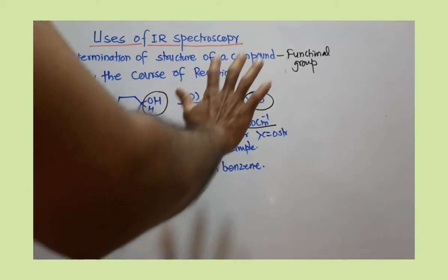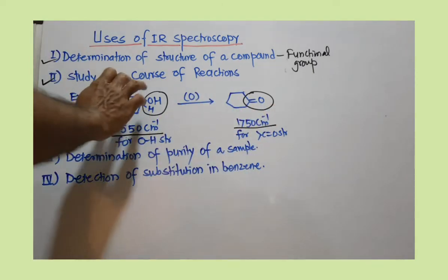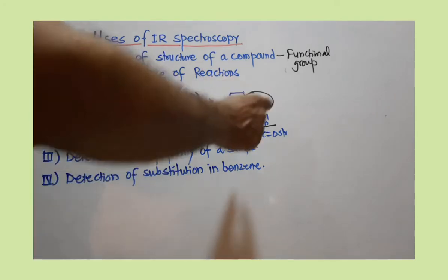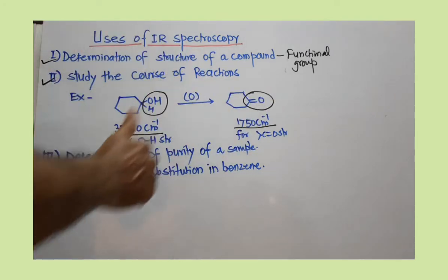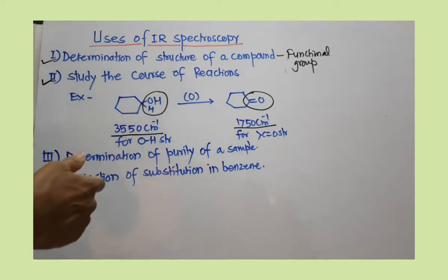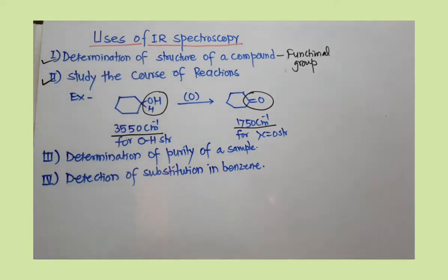If you compare the IR spectrum of the starting material and the product, you can easily predict whether the reaction is completed or not, or whether the reaction is taking place accordingly. This is how IR spectroscopy is useful in the study of the course of the reaction.